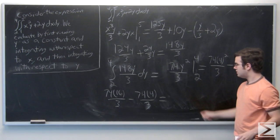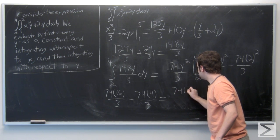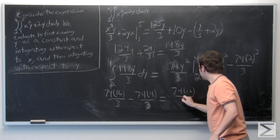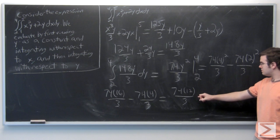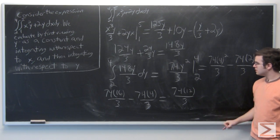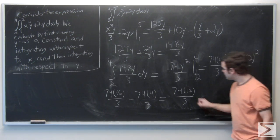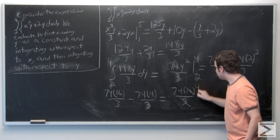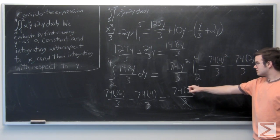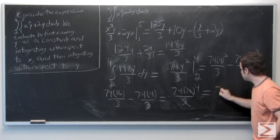Okay, and we can simplify this to be 74 times 12 over 3. And here we could reduce this further because 12 and 3 both have the factor of 3, and therefore we can cancel out the denominator and reduce 12 to 4. So we're left with 74 times 4, and this is equal to 296.